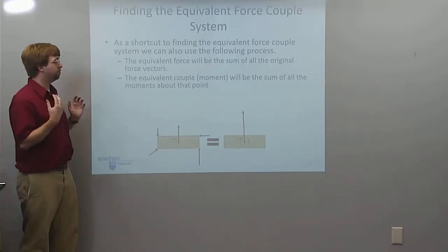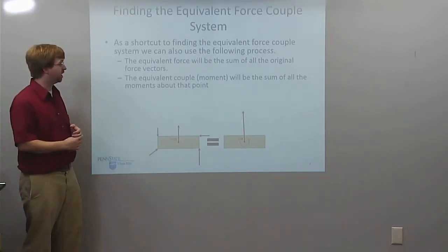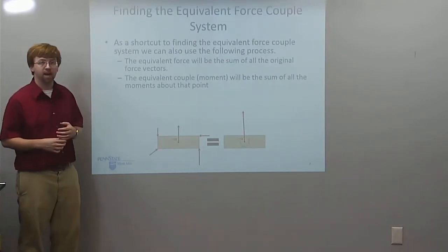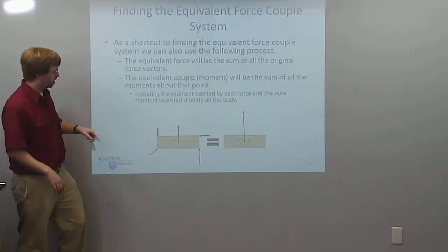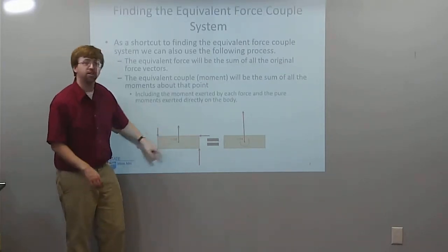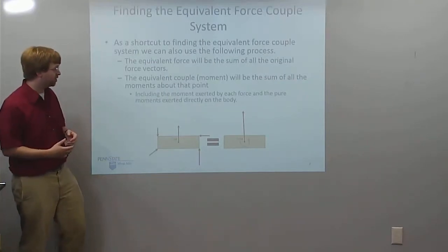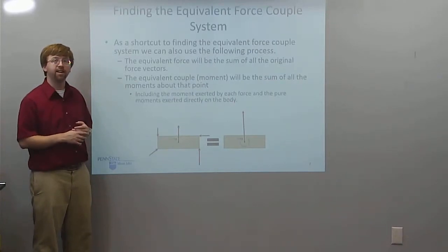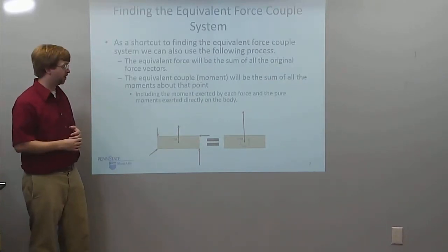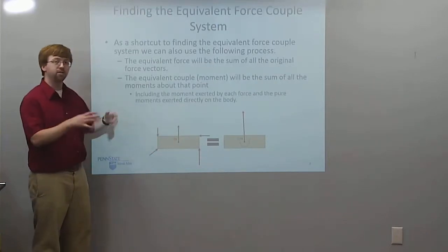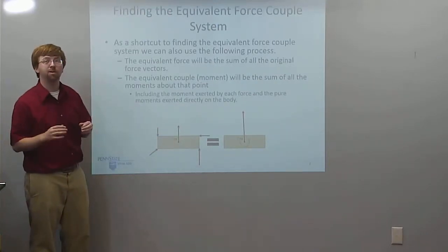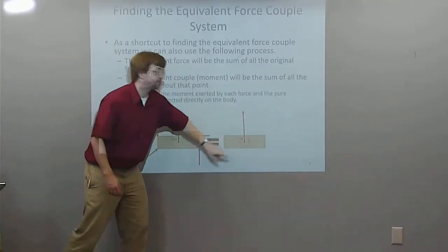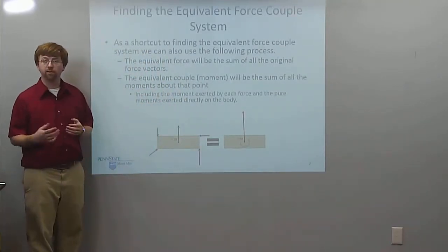To find the equivalent moment that goes with this whole thing, I can simply take the sum of all the moments about that point. This comes in two forms. Each one of these forces is going to exert some moment about that point. I would add all those moments. Or sometimes directly, we have a moment that's just exerted on a body, and I would just add those in as well. So I'm going to take all the moments about this point, add those up, also add in any moments that are directly acting on the body, and I find my MEQ, or this moment for my equivalent force couple system.